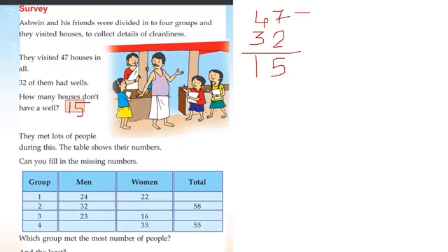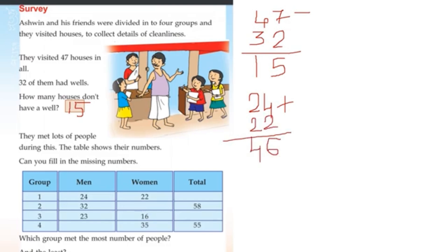They met a lot of people during this. The table shows their numbers. Can you fill in the missing numbers? Group 1: 24 men and 22 women. We will fill in the total: 24 plus 22. 4 plus 2 is 6, 2 plus 2 is 4. The total number is 46.